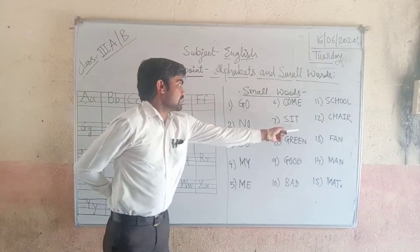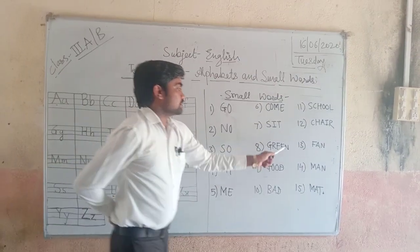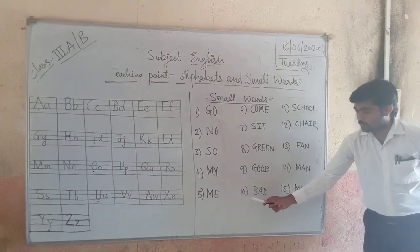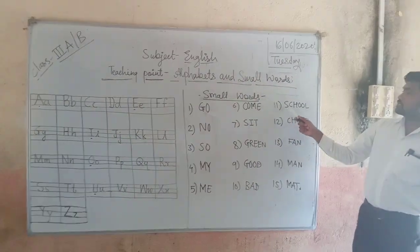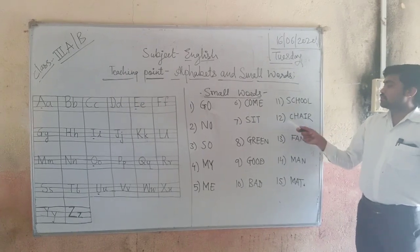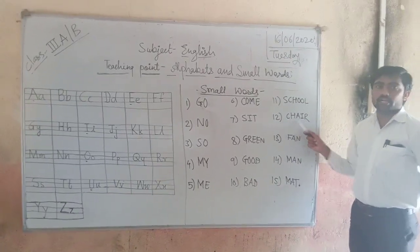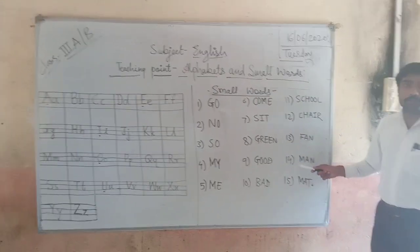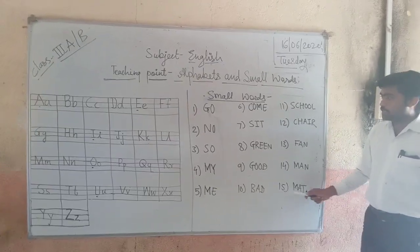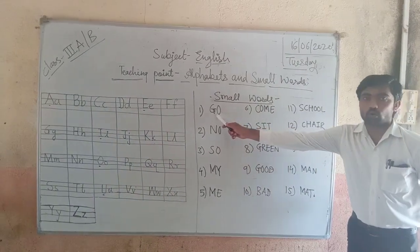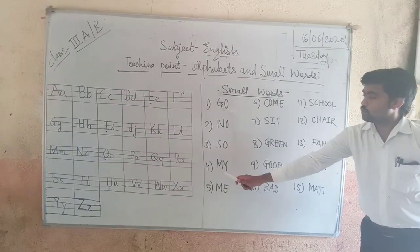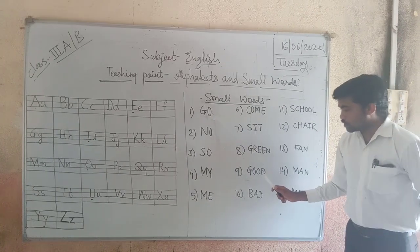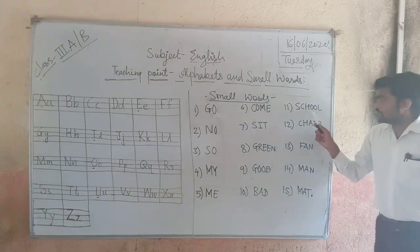Seventh: S-I-N-G, sing. Eighth: G-R-E-E-N, green. Ninth: G-O-O-D, good. Tenth: B-A-D, bad. Eleventh: S-C-H-O-O-L, school. Twelfth: C-H-A-I-R, chair. Thirteenth: F-A-N, fan. Fourteenth: M-A-N, man. Let me explain once again: go, no, so, my, me, come, sing, green, good, bad, school, chair, fan, man.